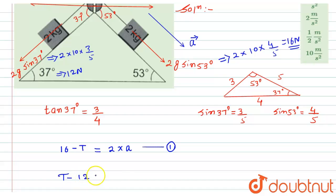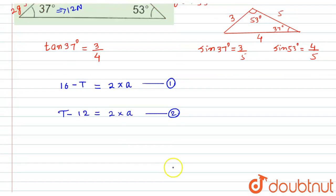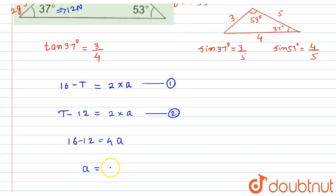Similarly, for the other side using Newton's law: T minus 12 equals 2a. Let this be equation 2. Now, adding equations 1 and 2, T cancels out, and 16 minus 12 equals 4a. Therefore, a equals 4 divided by 4, which gives a = 1 meter per second squared.